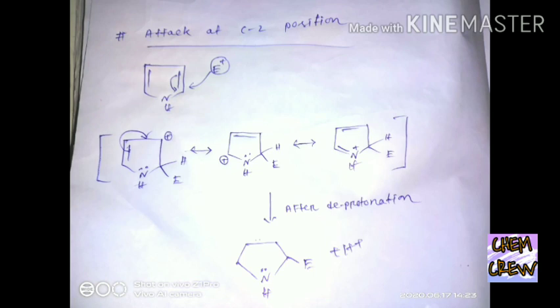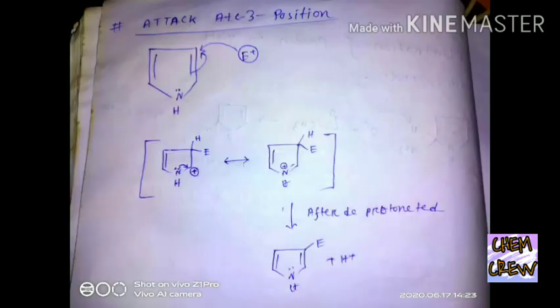After deprotonation, the final product forms. In case of C3 position, if an electrophile attacks the C3 position in pyrrole, then two resonating structures are formed. That's why the C2 position is more preferable for electrophilic attack compared to the C3 position.